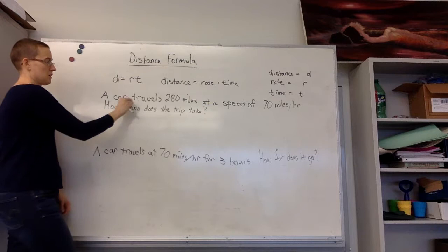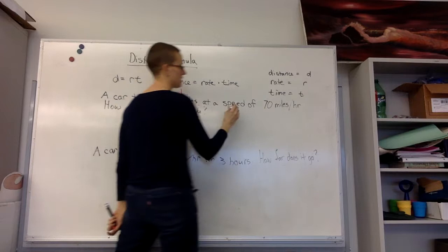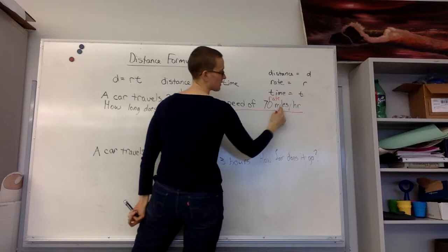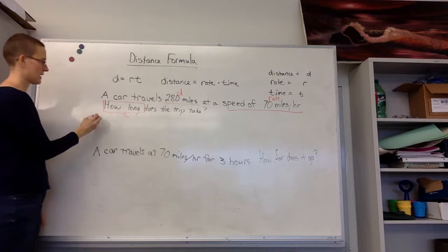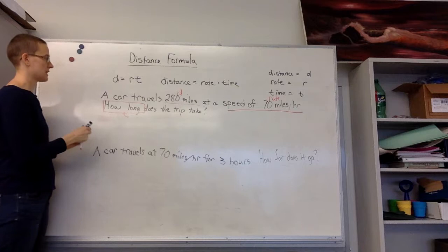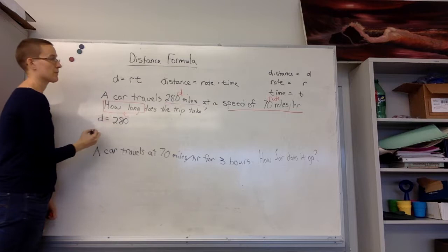So we have 280 miles. Miles talks about our distance. Speed is my rate, so my rate compares miles to hours in this case. And how long does the trip take? So how long is asking what the time is. If I list out what I have here: my distance is 280, my rate r is 70, and I'm looking for my time t.